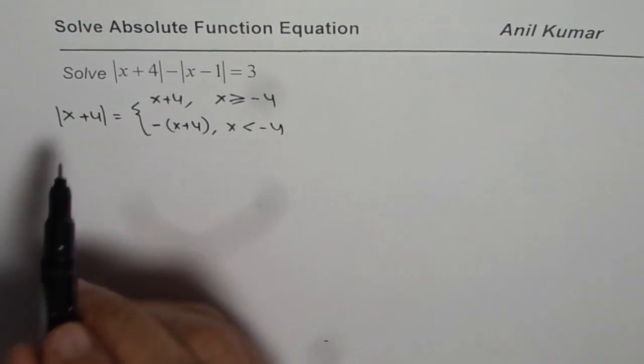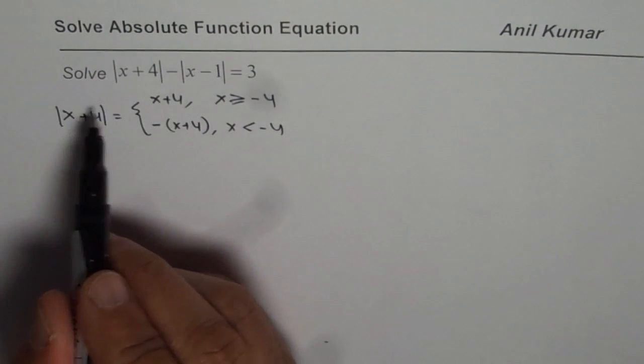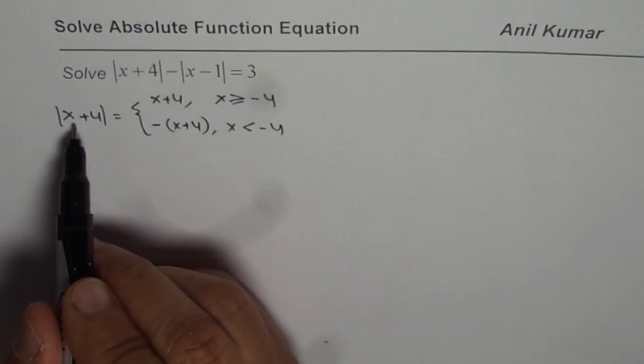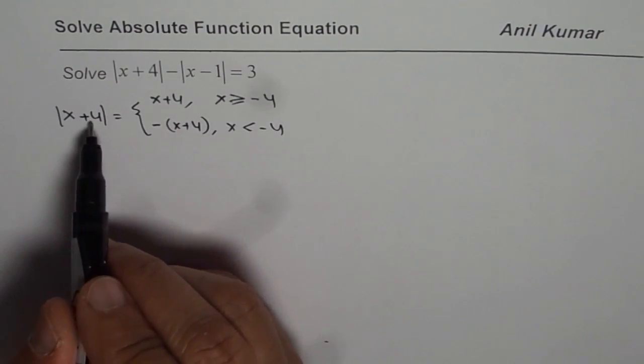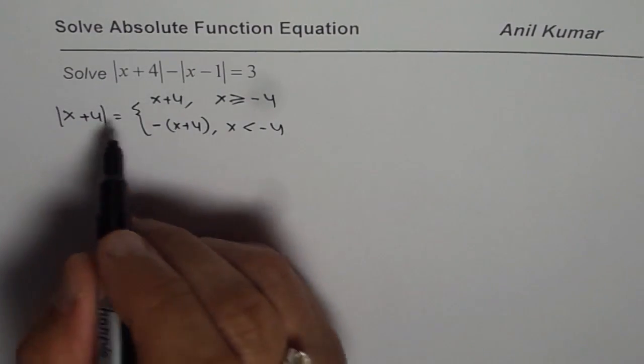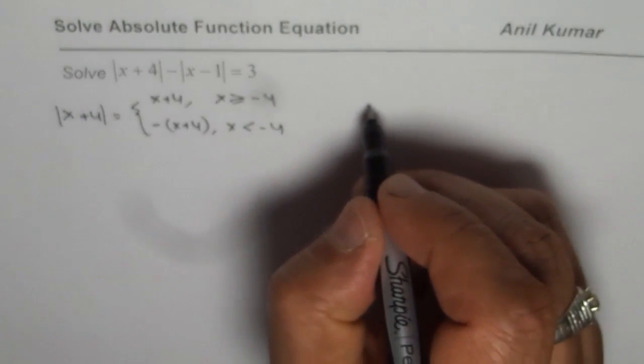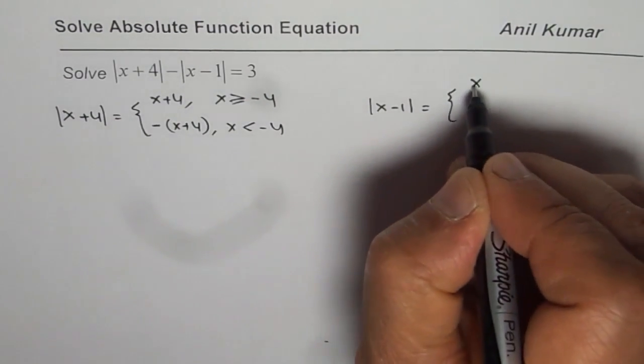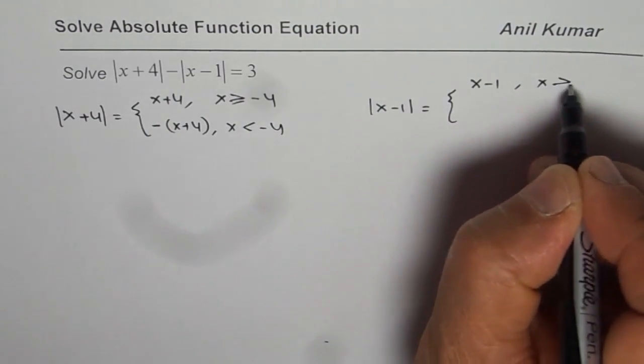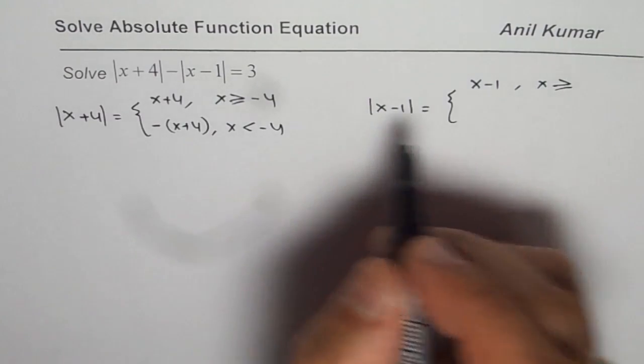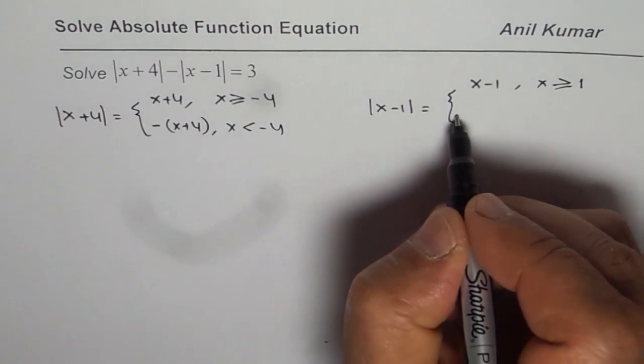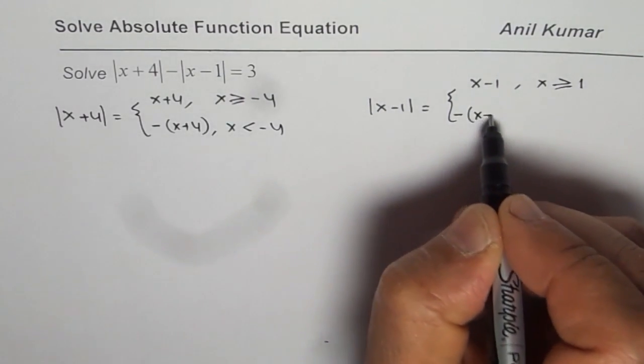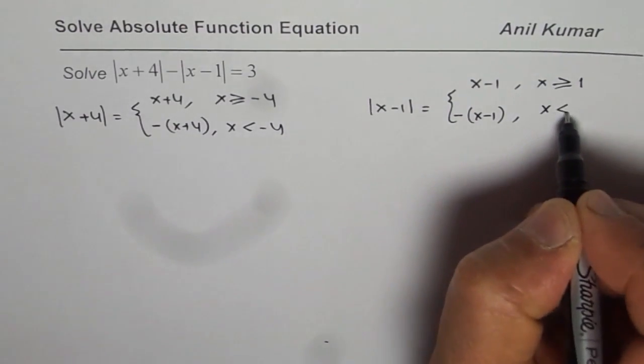How do we get this value -4? x+4 should be greater than 0, or equals 0 at -4. Similarly, let us redefine absolute value of x-1. It equals x-1 if x ≥ 1, and equals -(x-1) when x < 1.